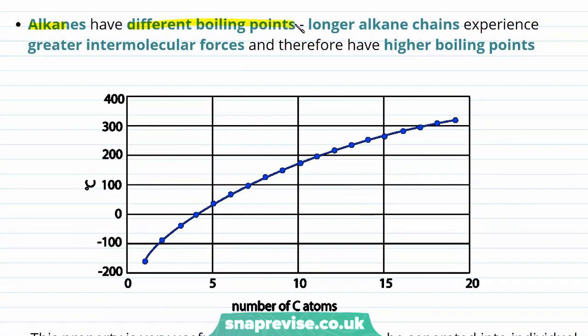Alkanes will have different boiling points because of their different chain lengths. Longer alkane chains will have greater contact with other molecules, leading to a greater intermolecular force of attraction between the molecules. As the molecules need to be separated for a substance to boil from a liquid to a gas, the larger the intermolecular forces, the more energy is needed to break these chains apart. If more energy is required for a substance to boil, the substance will have a higher boiling point — and this is why longer alkane chains have higher boiling points.